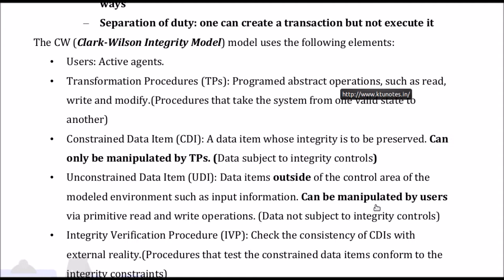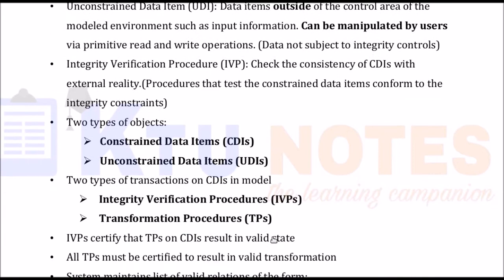The value of unconstrained data items can be manipulated by users using primitive read and write operations. Next are integrity verification procedures (IVP), which check the consistency of CDIs — constrained data items — with external reality. Whenever money is withdrawn or deposited, the consistency condition is always checked using IVPs. There are two types of objects (CDIs and UDIs) and two types of transactions (IVPs and TPs).